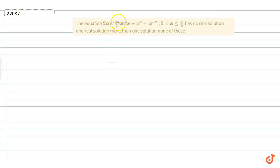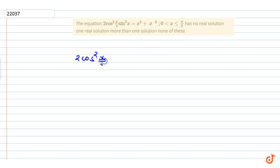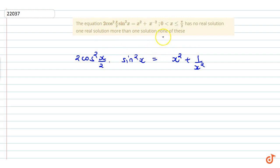Look at this question: we are given the equation 2cos²(x/2)·sin²x = x² + x⁻² (which is x² + 1/x²). We are asked whether this has no real solution, one real solution, more than one solution, or none of these. We need to determine which values satisfy this equation.